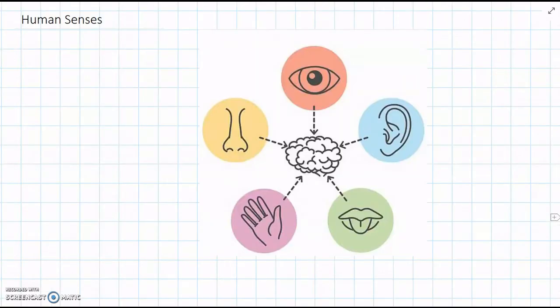And in humans, there are five main sensors that we can detect stimuli with. And these are the ones that we've learnt at primary school, and you're probably pretty familiar with them all.